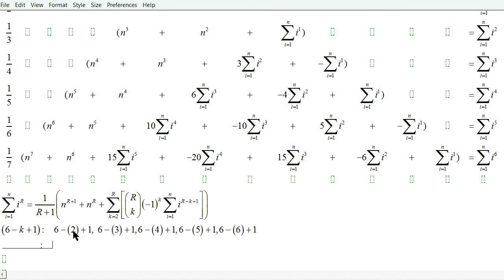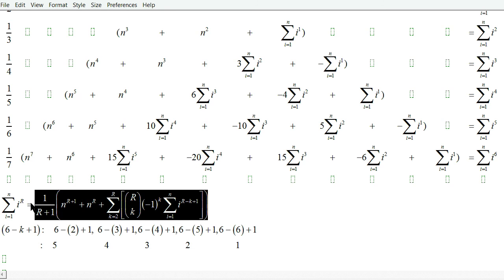Evaluating each one of these, we have 6 minus 2 is 4 plus 1 is 5. Then obviously, the next one is going to be 6 minus 3 plus 1 is 4, and then 3, and then 2, and then 1. And that corresponds to the powers of these summations.